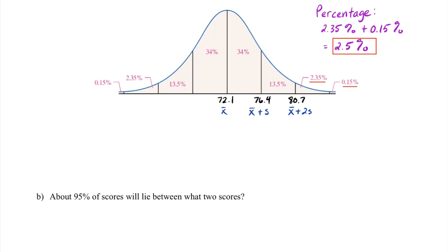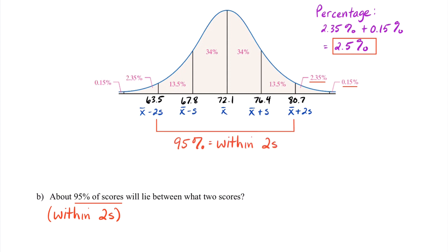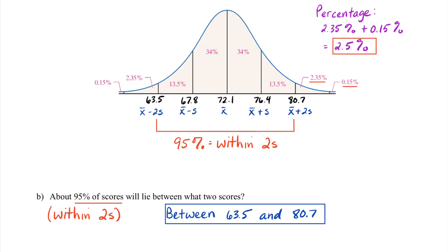Part B asks about 95% of scores — we need to remember that 95% is a key number for us. 95% of our data will lie within two standard deviations, so within 2 times s. Going back to our distribution, we find x-bar minus s gives 67.8, and x-bar minus 2s gives 63.5. From the empirical rule, 95% of the data fall within two standard deviations, and what we just found are the key points where that occurs: between 63.5 and 80.7. Keep in mind those are test scores — values of x, not percentages.